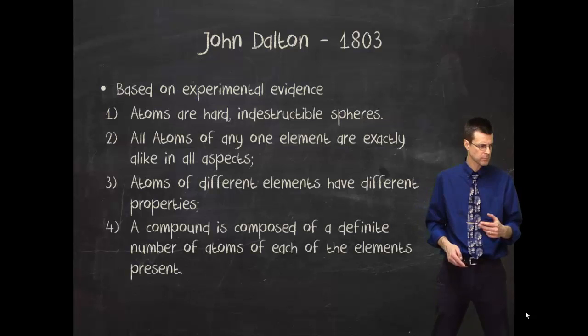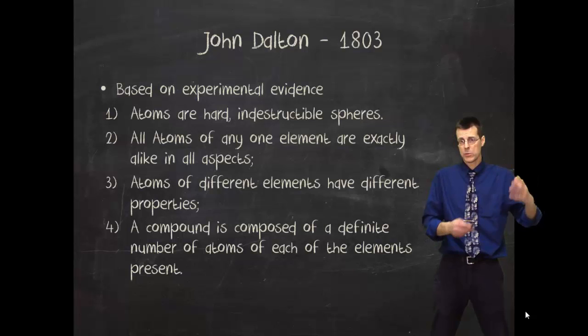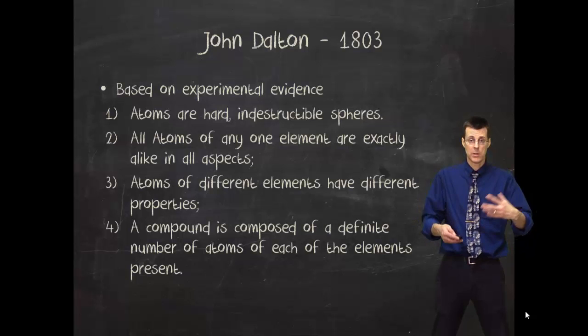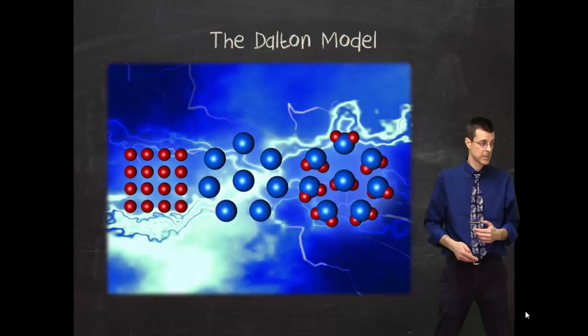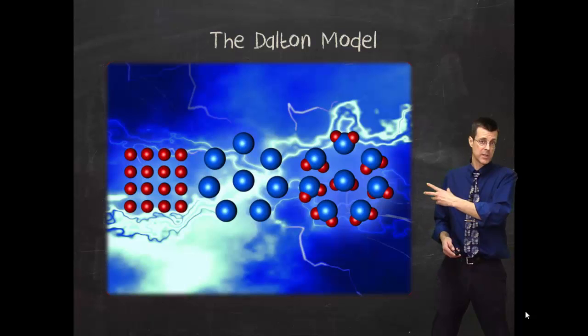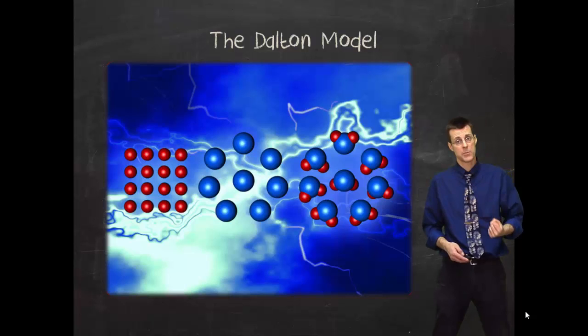And then he also started talking about compounds. So that water was not a unique atom, like Democritus thought, but it was a combination of atoms. So we have now, that's where we're getting the experimental evidence into it. So his model looked like this, hard and indestructible spheres. And you've seen pictures like this a lot of times, and for some things we will still use that. It's a pretty good model for some things.